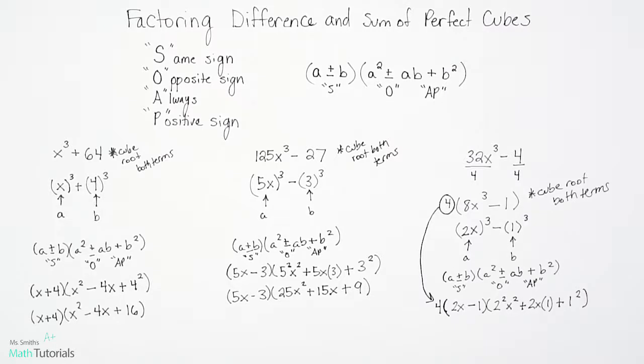So now we're ready to write our final answer. So we've got that 4. That was the GCF. Just kind of tags along. 2x minus 1. Now 2² is 4. 2 times 2. x² is just x². Plus 2x times 1 is 2x. And 1 times 1 is just 1. So there is our factored form for our difference of perfect cubes.